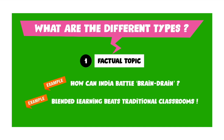The second example is: Blended learning beats traditional classrooms. Note that this one ends with an exclamation mark as opposed to the question mark in the previous topic, which means it is a statement. Anytime you're given a statement in a group discussion, you're supposed to either agree or disagree with it. You need to talk about the good points of blended learning, the negatives of blended learning, compare it to traditional classrooms, and then come down to some sort of a decision and declare whether the statement makes sense or it does not.